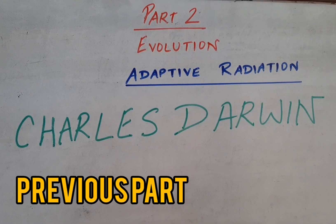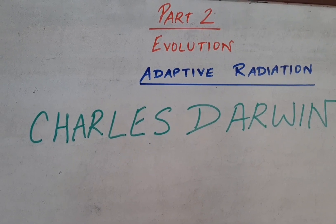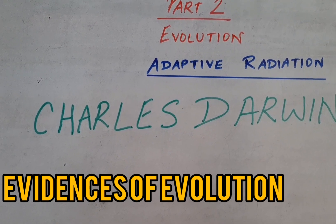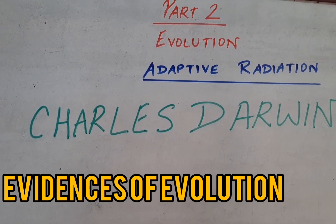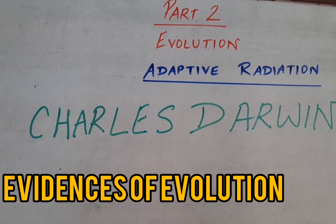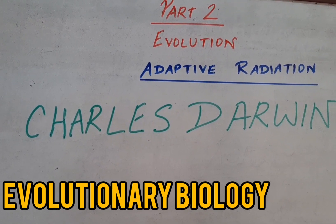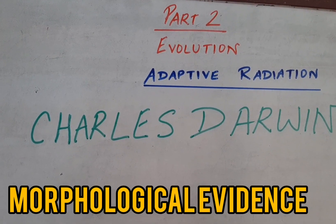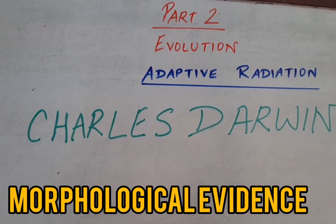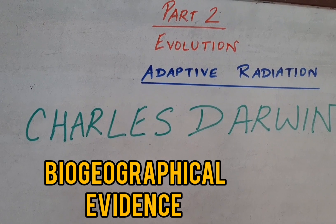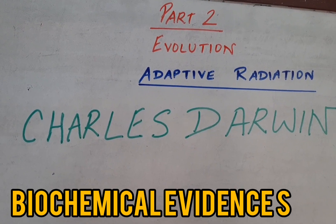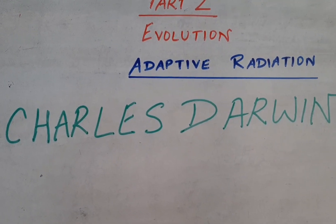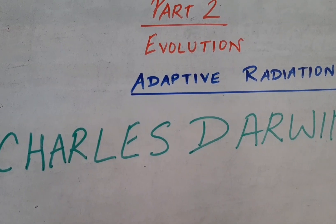In the previous part, I discussed the various types of evidences that suggest evolution or evolutionary biology: morphological evidence, anatomical evidence, biogeographical evidence, and biochemical evidence. Here in this video, we are talking about adaptive radiation.